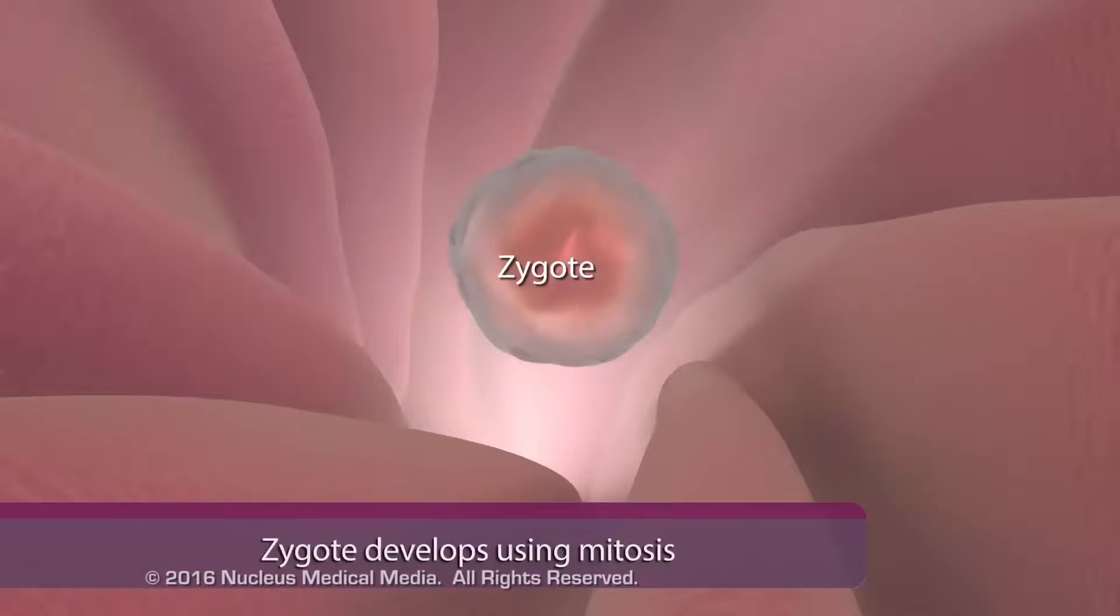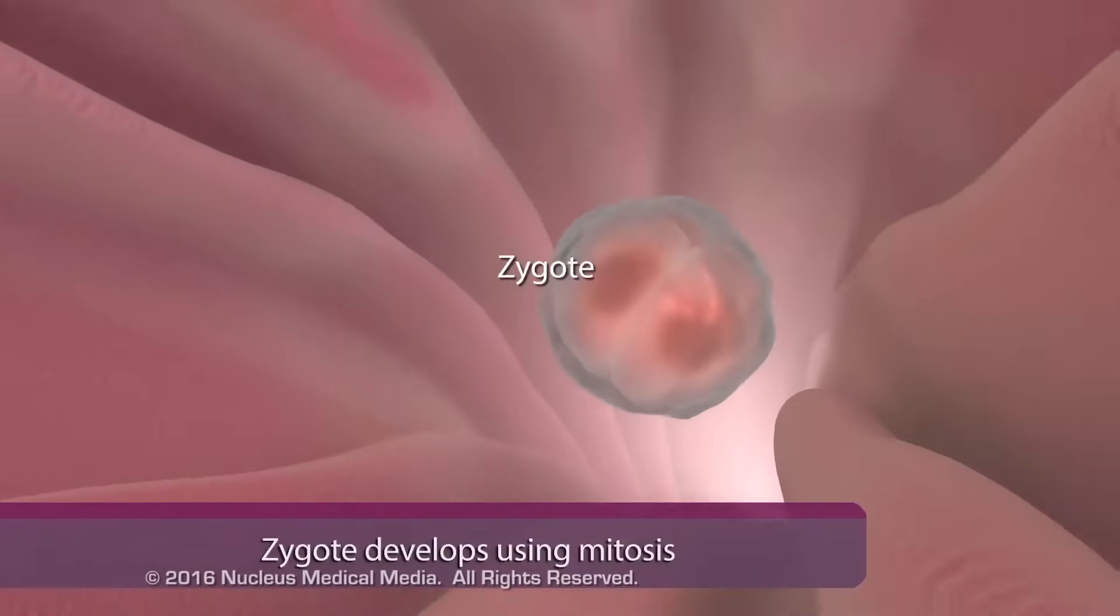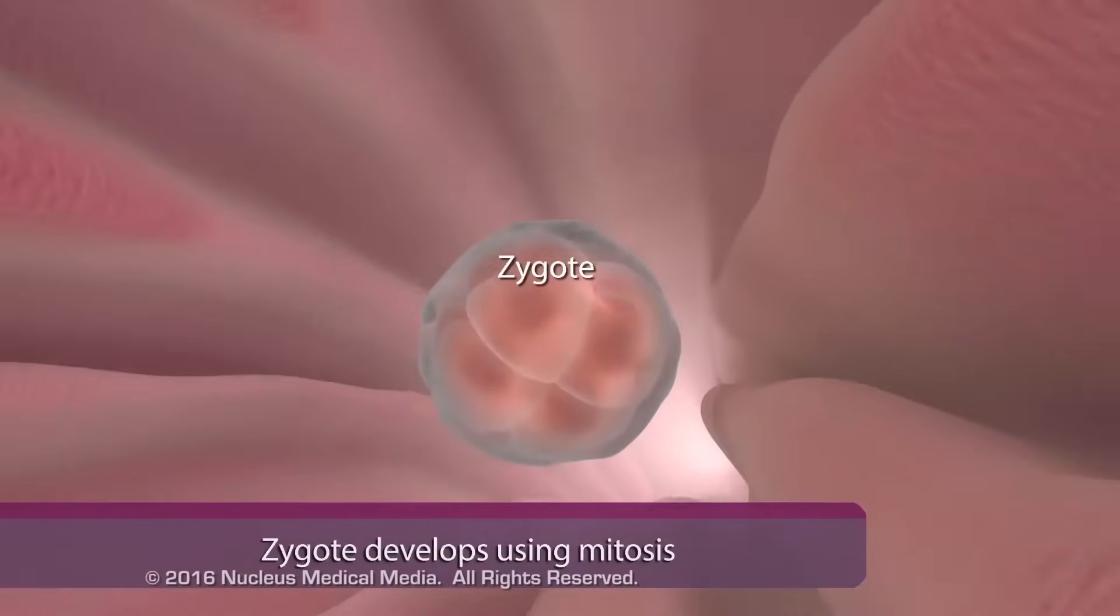The zygote has 46 chromosomes and continues to develop using mitosis.